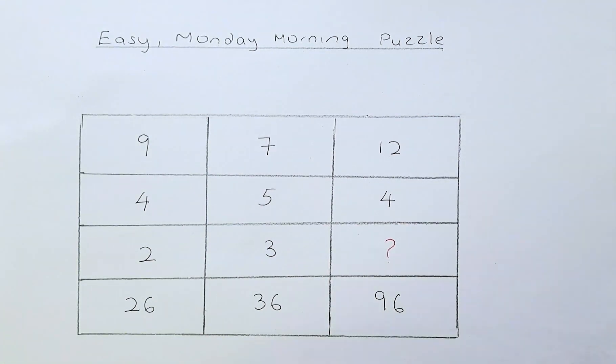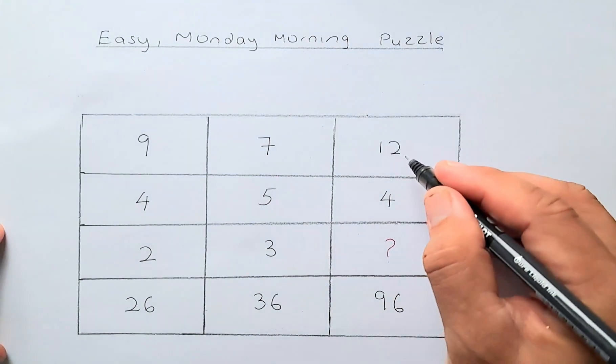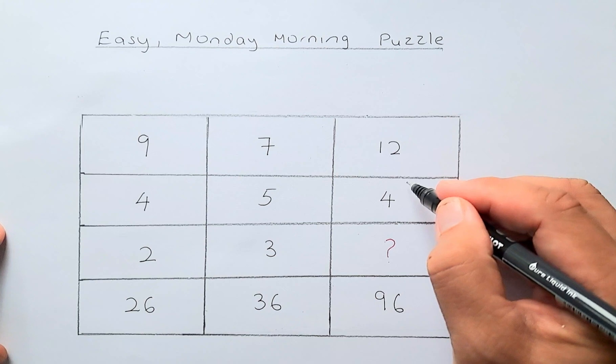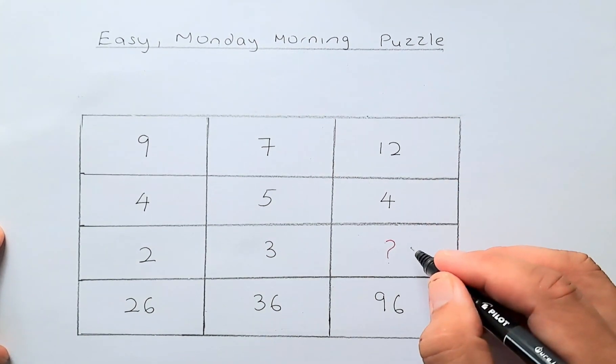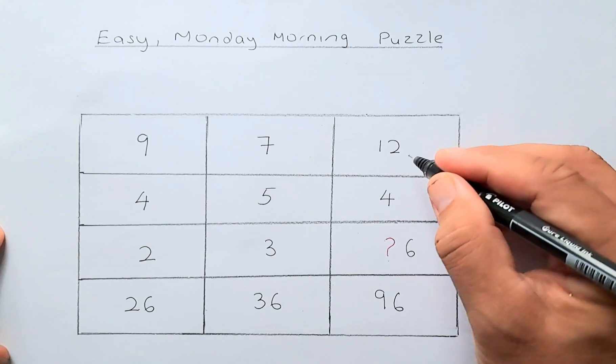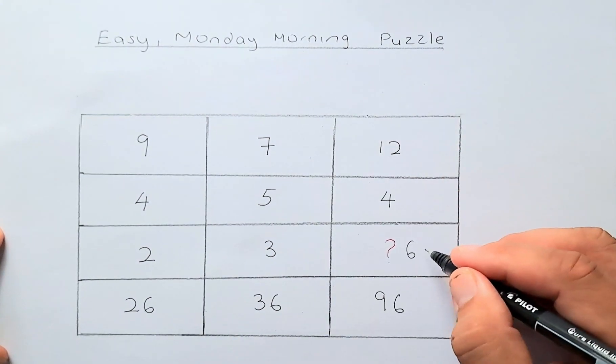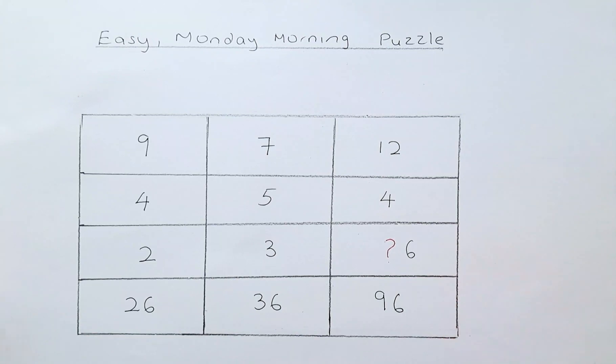In our example, 12, 4, question mark and 96. We are going to add 12 plus 4 to give you 16. 16 times the number to give you 96. So that number will have to be 6. Because 12 plus 4 is 16, and 16 times 6 is 96.